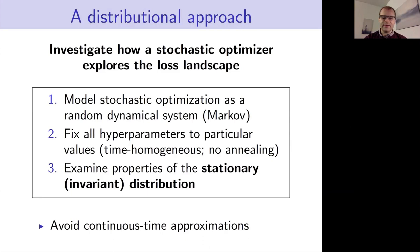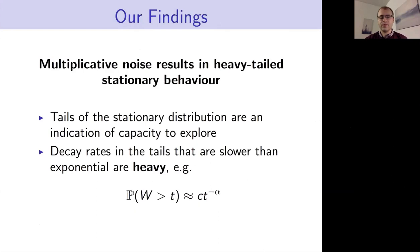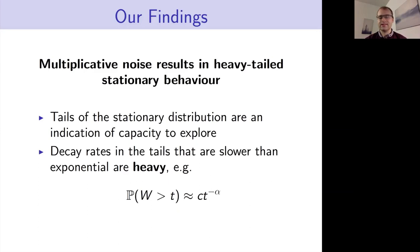There are similar analyses in the literature, but many rely on continuous-time approximations. We've gone to efforts to avoid these approximations as we feel they complicate the discussion, so we stick to discrete-time analyses. Our findings are that multiplicative noise generally can result in heavy-tailed stationary behavior. We consider the tails of the stationary distribution to be a good indication of the algorithm's capacity to explore. Heavy-tailed stationary behavior means the algorithm should have very good exploration capacity. By heavy tails, we mean the decay rate in the tails is slower than exponential.